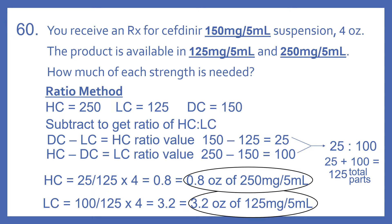We add those together: 25 plus 100 gives 125 — that is the total parts. To determine the amount of the high concentration, we take our high concentration ratio value, 25, divided by the total parts, 125, times the amount needed, which is 4 ounces. That gives us 0.8 ounces of the 250 mg per 5 ml.